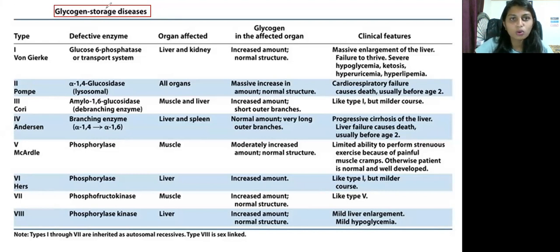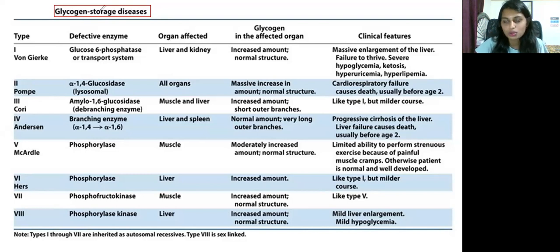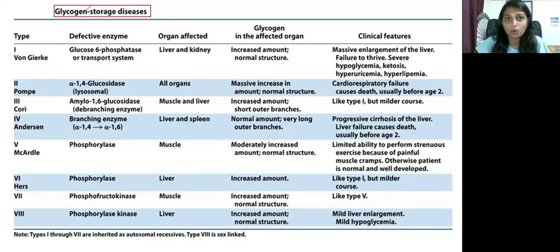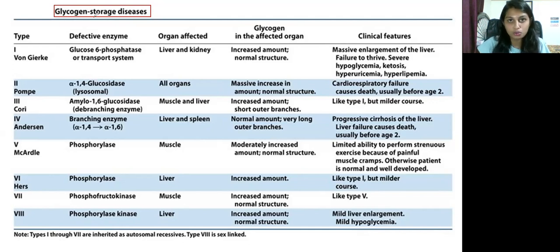First of all, what is glycogen? It is a storage polysaccharide in animals. When compared to plants, starch is a storage polysaccharide. But in animals, glycogen is the storage polysaccharide. It has to be stored in our body, and during emergency conditions it has to convert into glucose and provide energy to us.